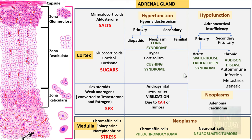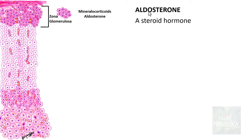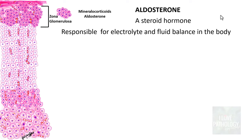Aldosterone is a steroid hormone responsible for electrolyte and fluid balance in the body, specifically regulating sodium, chloride, and potassium levels. It increases sodium absorption in the distal tubules of the kidney, the gastrointestinal mucosa, and salivary glands. Predominantly in the distal tubules, it also increases secretion of potassium from the kidneys, thereby maintaining electrolyte and fluid balance.